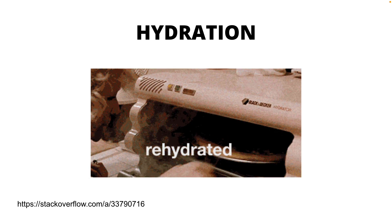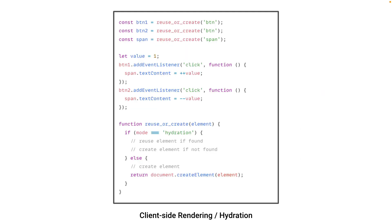In the current generation of hydration, we do everything like client-side rendering except that instead of creating nodes, we reuse existing nodes. You can think of hydration as a mode of client-side rendering: if the mode is on, we reuse or create nodes if we can't find them; if hydration mode is off, it's just client-side rendering and we create elements. So it's the same piece of code doing two things. One thing to note: in hydration mode there's a sense of repairing content — if we can't find a DOM element to reuse, we create one. So if server-side rendering returns nothing at all, we can still hydrate and create those elements. Client side is the source of truth.